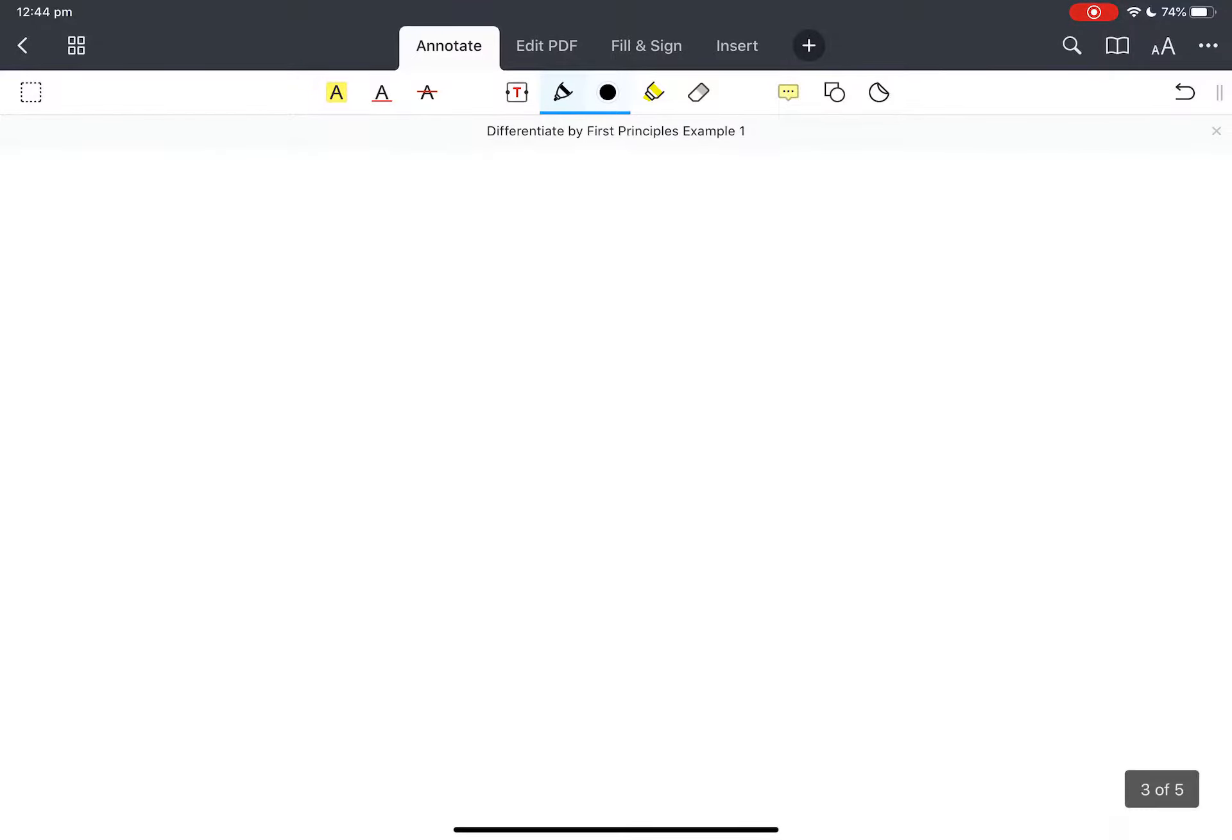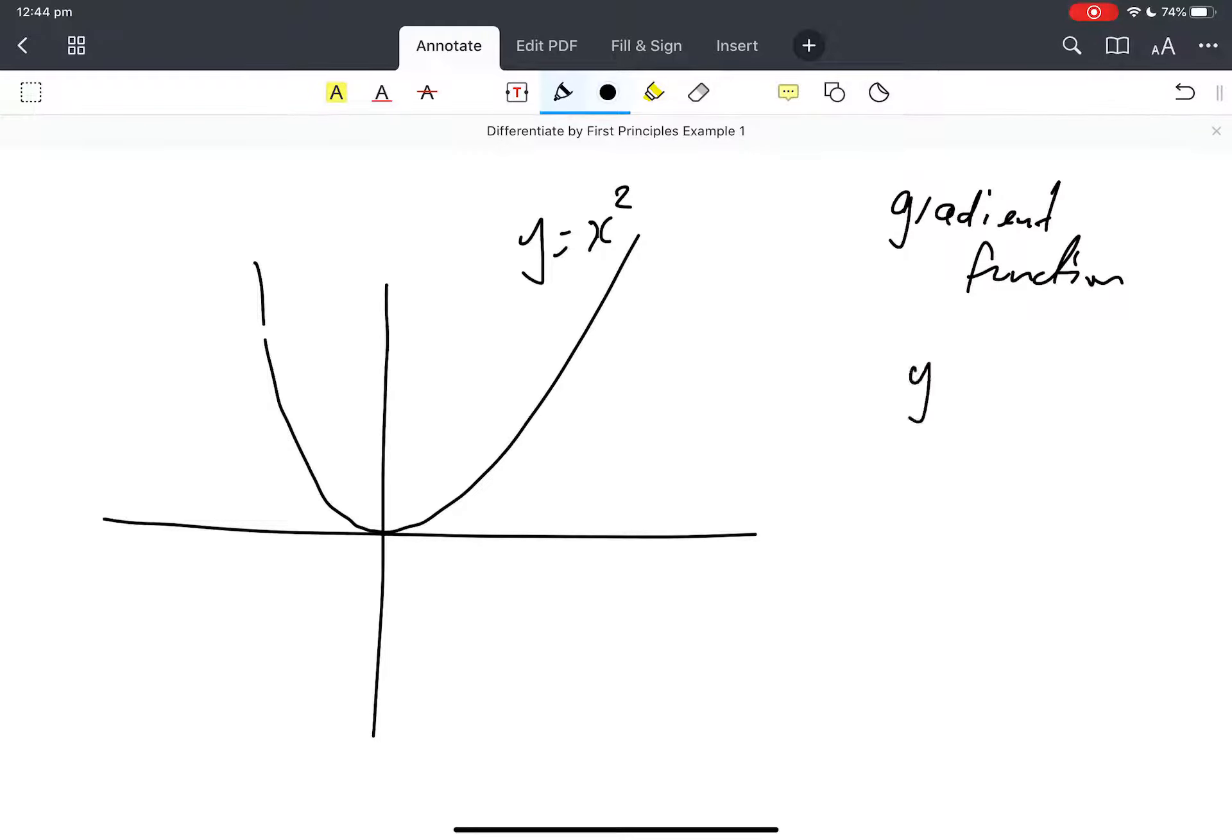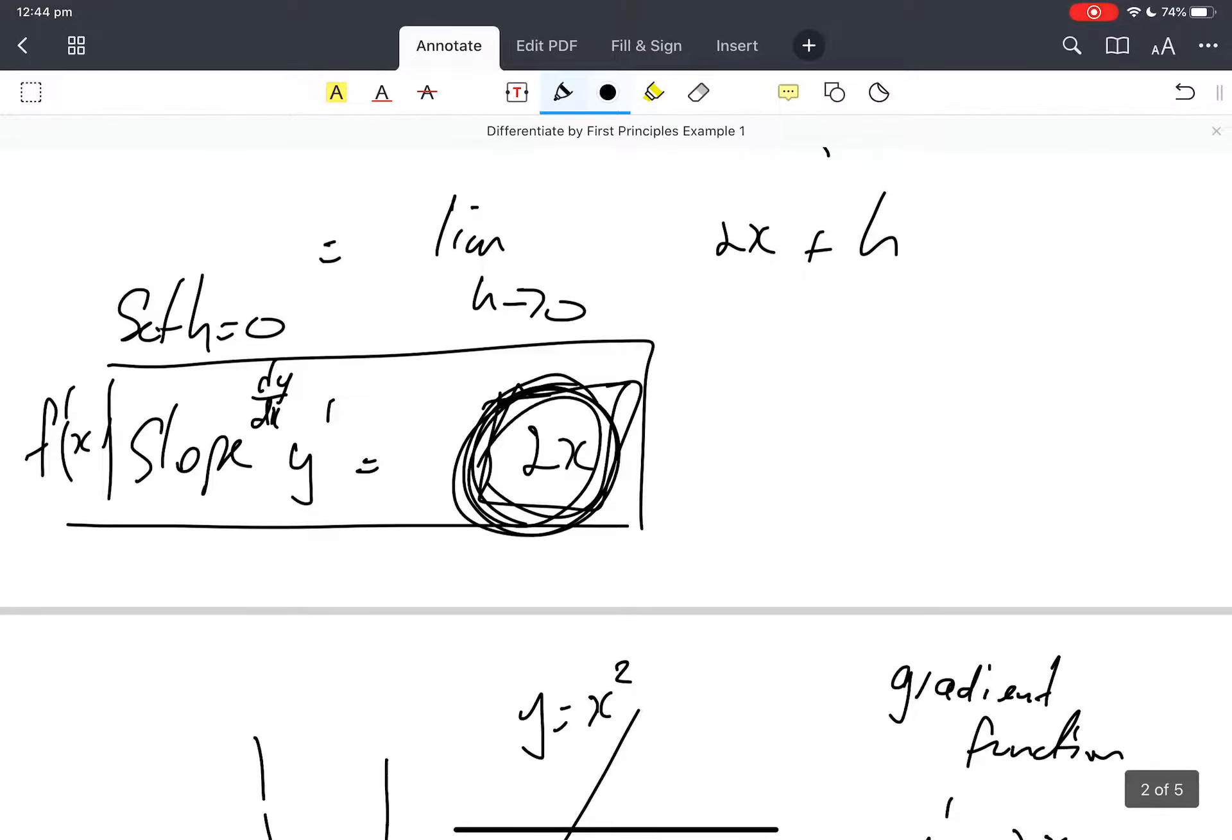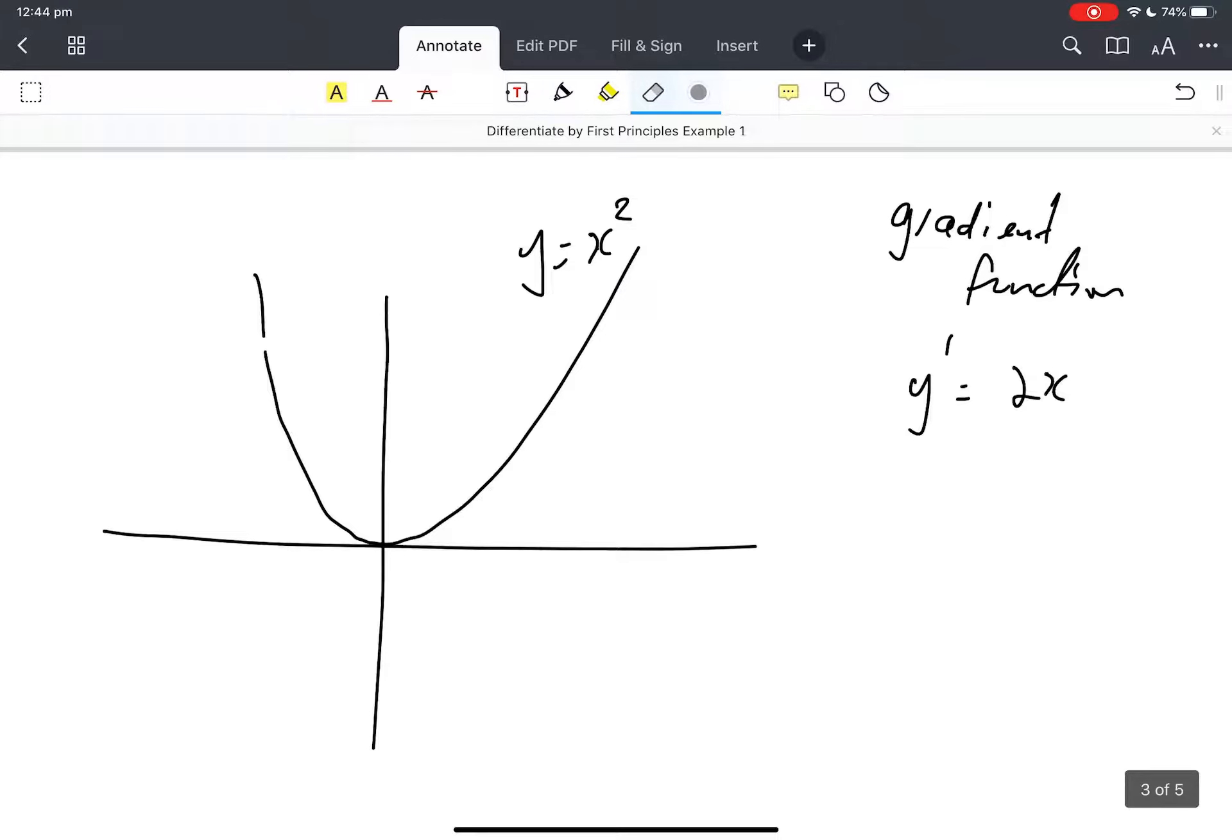I might just draw a parabola, hey? There's y equals x squared. And I have a gradient function, which is y dash, which was this 2x gradient function, y dash. This says slope equals, so let's go.